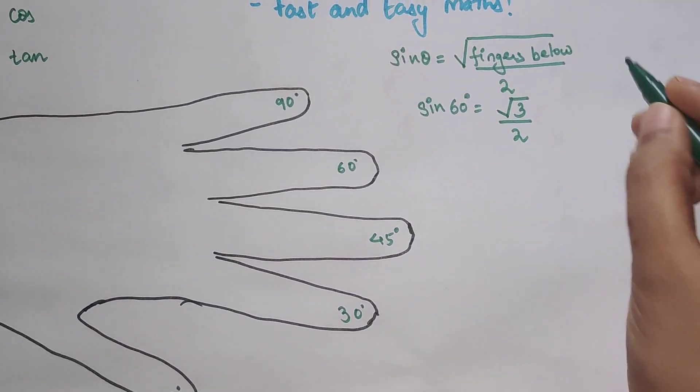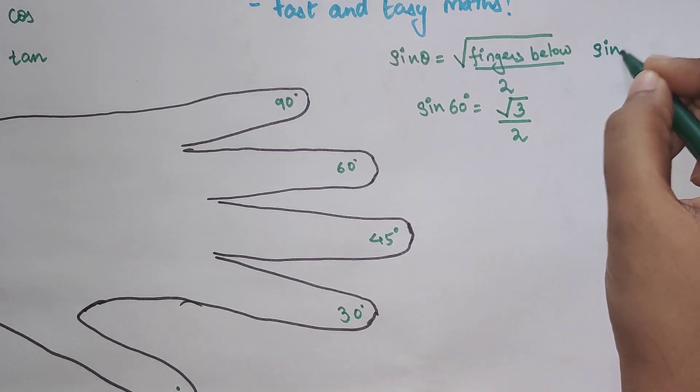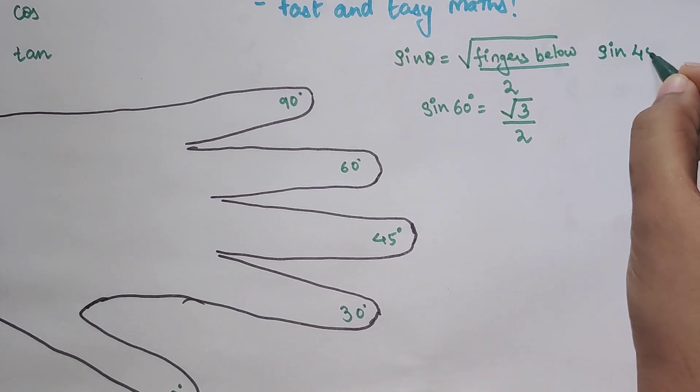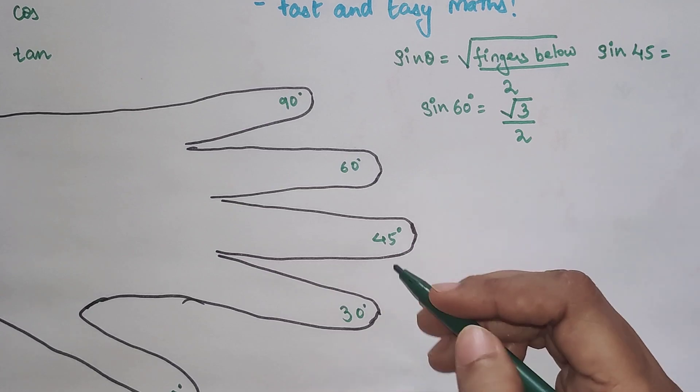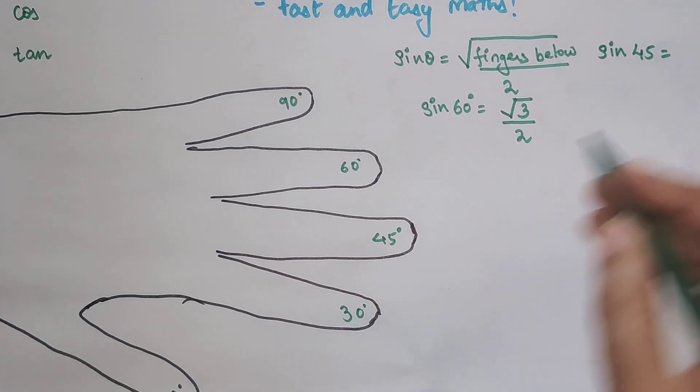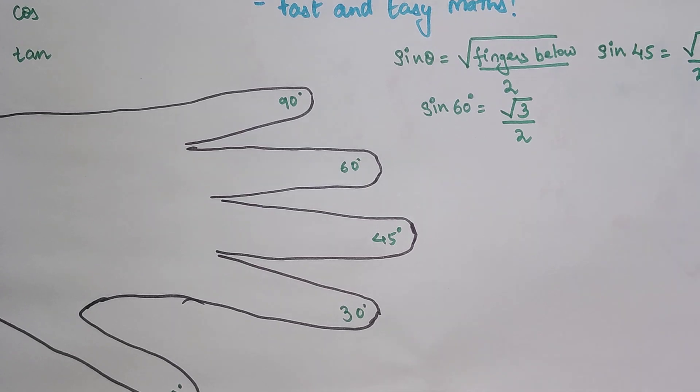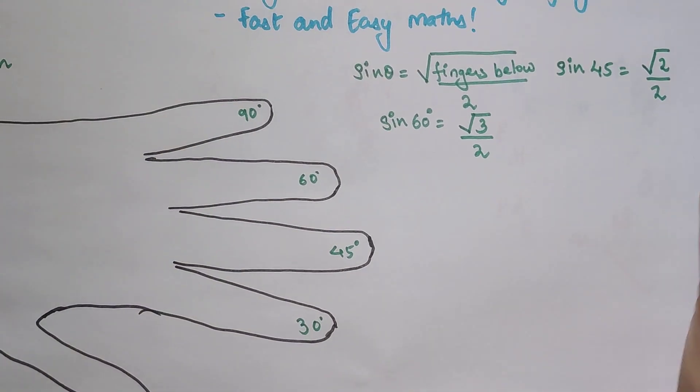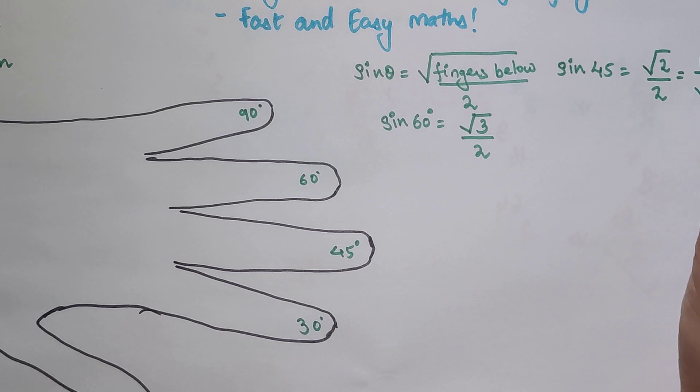Now let's very quickly try to find out sin of 45. So sin 45 is how many fingers below? Root 2 upon 2. This can then be cancelled and we get 1 upon root 2. You can still use this also when you are doing your proper calculations.